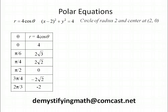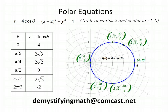Plotting all those points on the polar grid, they all land on the circle centered at (2, 0) with radius 2 — exactly what we expected. Sometimes it's easier to graph in rectangular form because we're more familiar with what those graphs look like, but it also helps to plot some points and see those relationships. Thank you for tuning in to Demystifying Math.